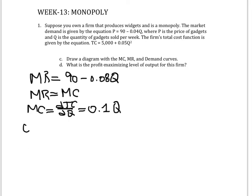And now we can make that equal to marginal revenue, 0.1Q equals 90 minus 0.08Q. And now we can try to solve for Q to find the value of output that maximizes profits.